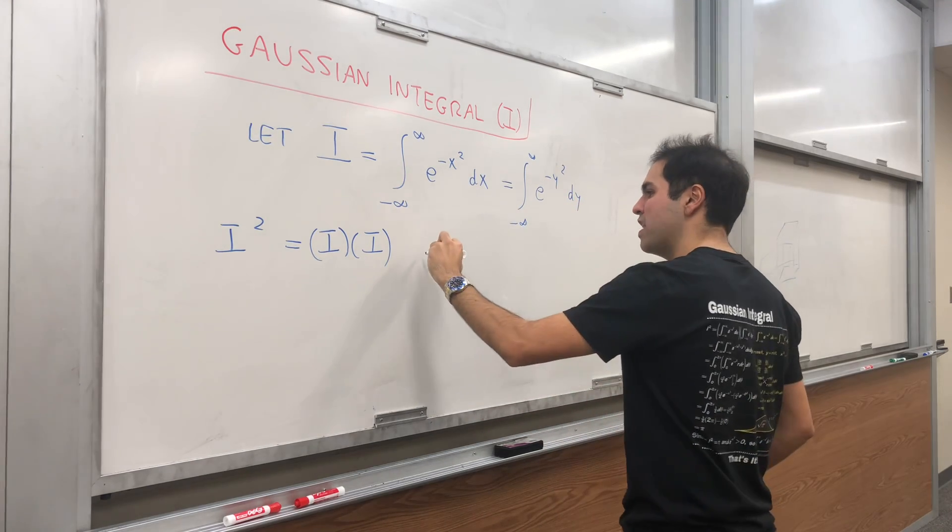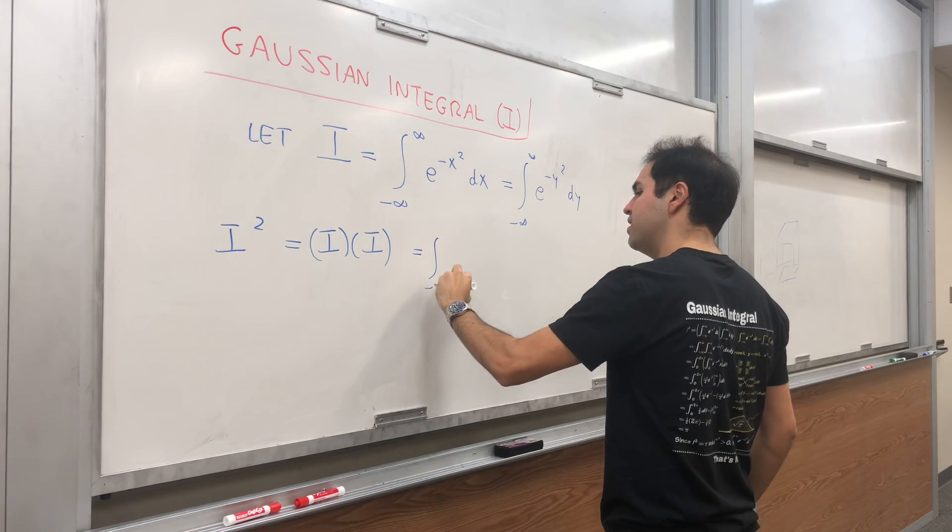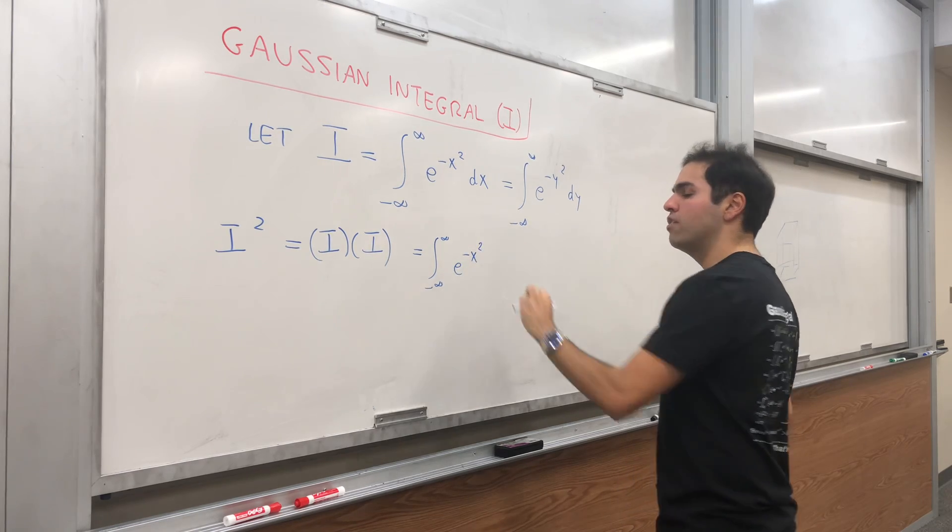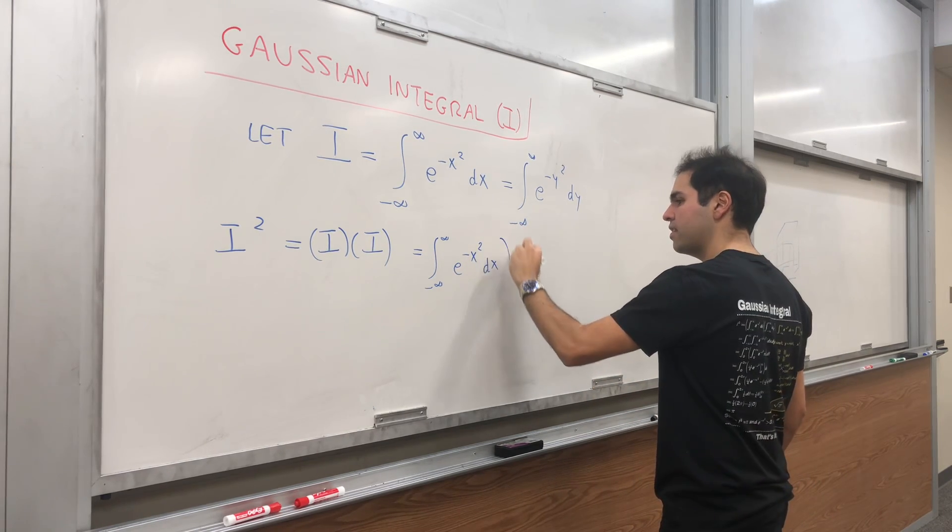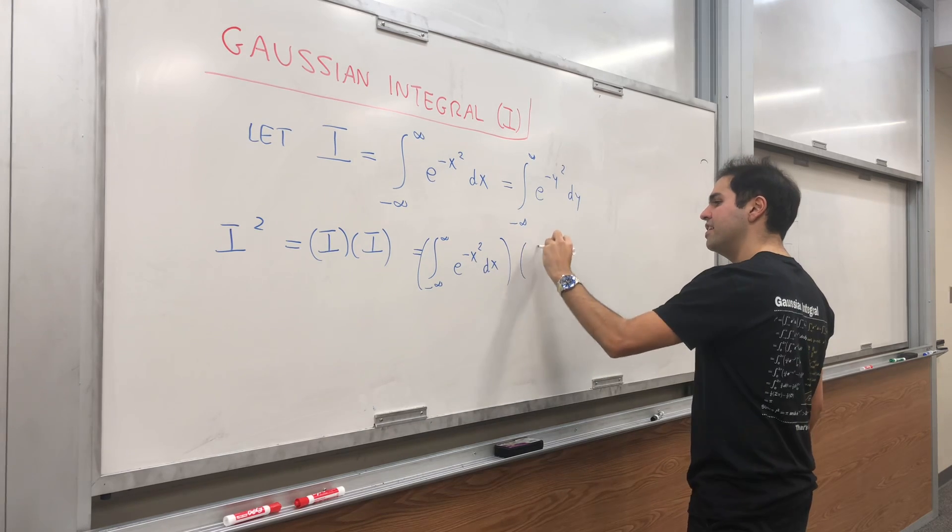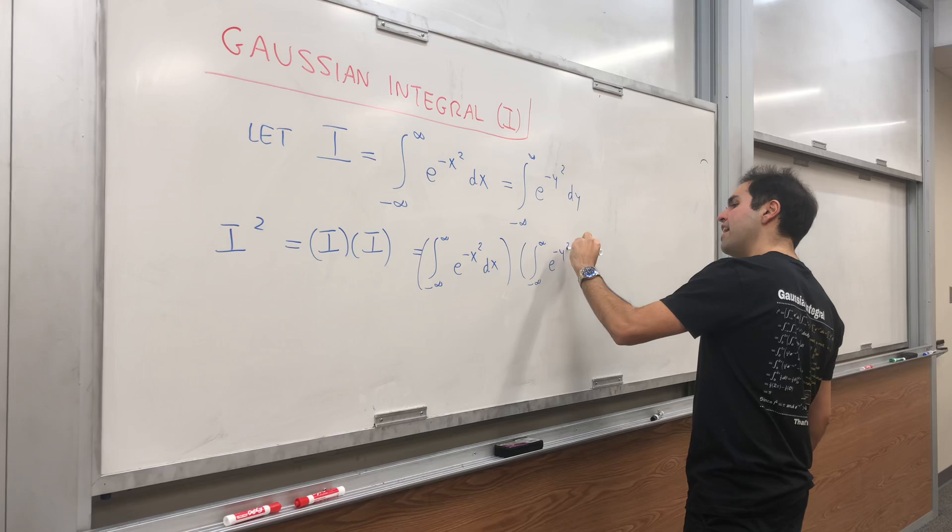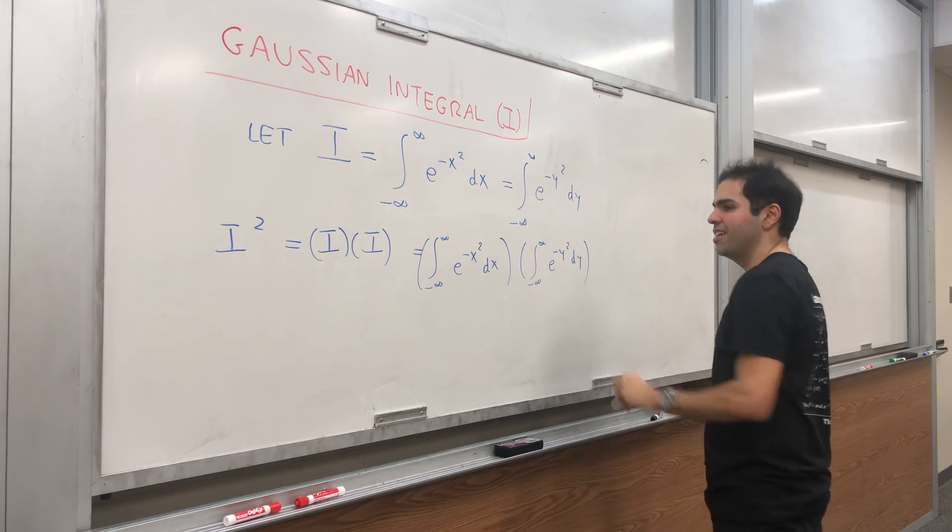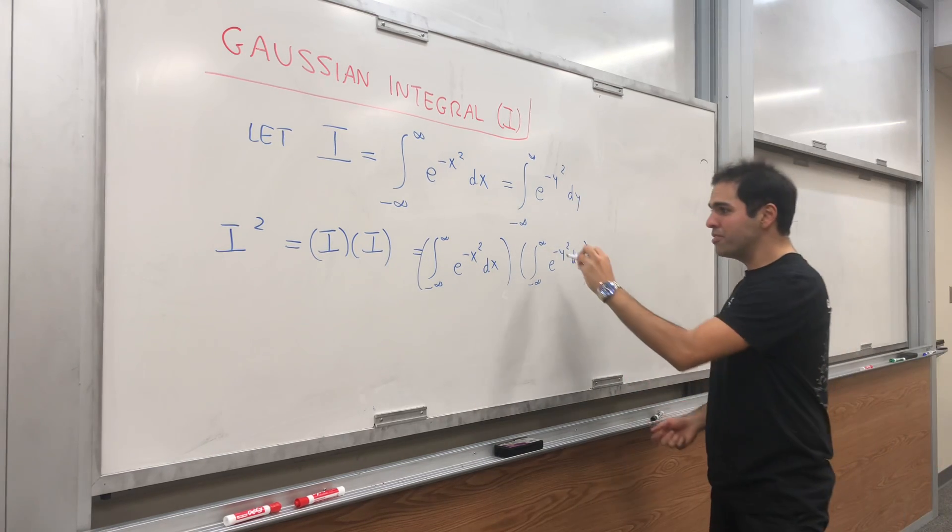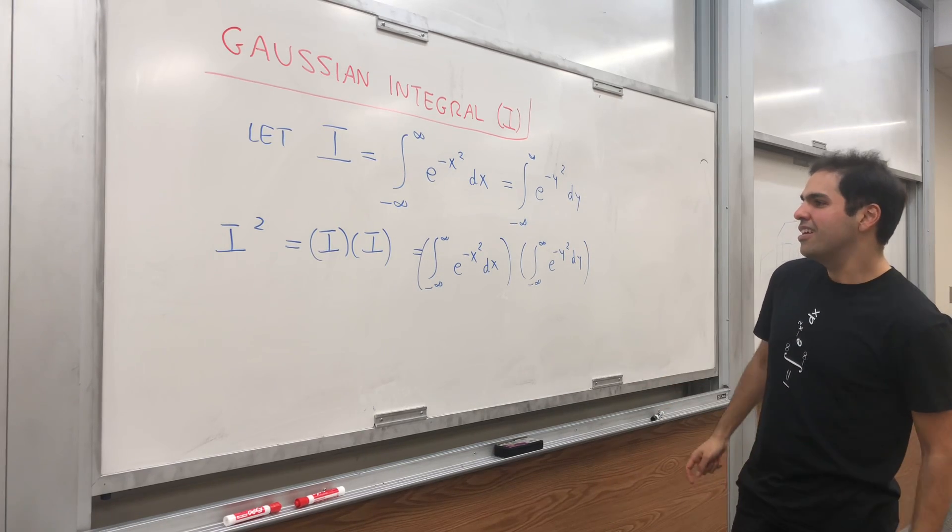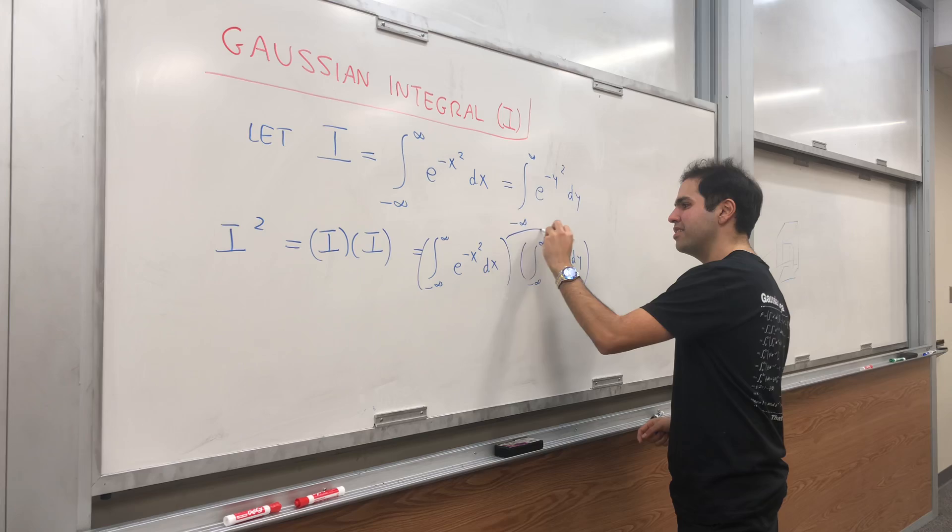Now let's use both of those variables. That's equal to the integral from negative infinity to infinity of e^(-x²) dx, and the integral from negative infinity to infinity of e^(-y²) dy. Here comes a beautiful thing: you have the product of two integrals, let's turn it into a double integral.